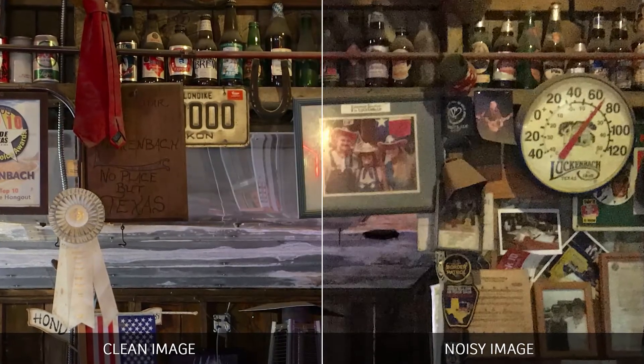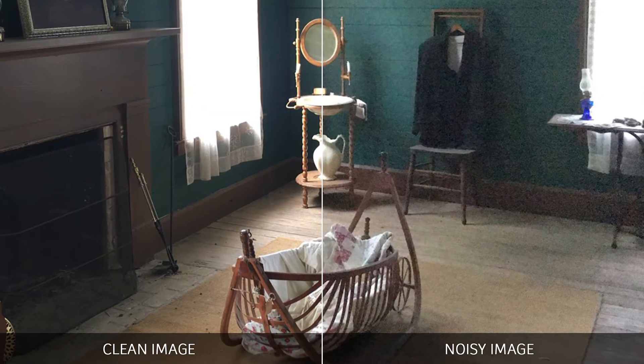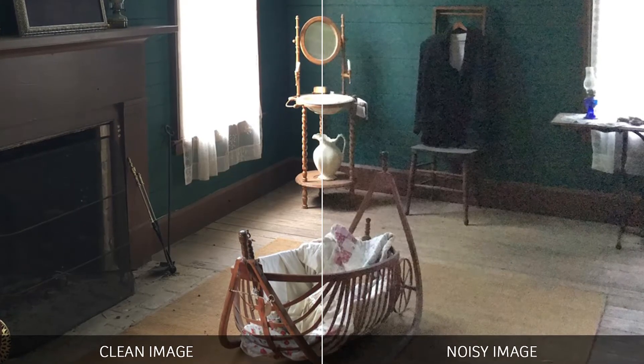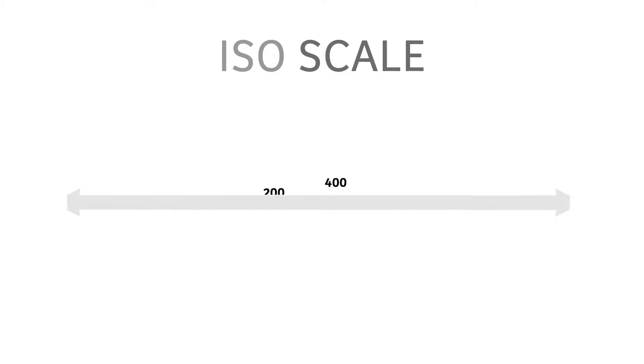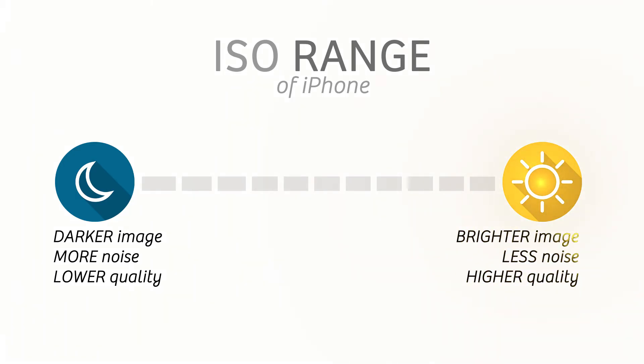Having knowledge about how ISO and shutter speed work will help you to make wise shooting choices so you can take the best photos for any given situation. The iPhone has a default ISO range from ISO 2000 all the way down to ISO 25. Most smartphones, the iPhone included, are optimized for the best results at low ISO settings.